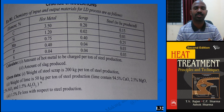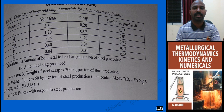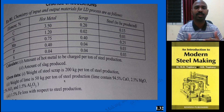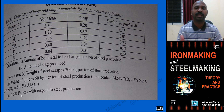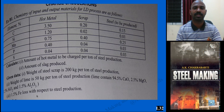The weight of lime used is 50 kg per ton of steel production. The lime composition is: 94.5% CaO, 2.5% MgO, 1.5% SiO2, and 1.5% Al2O3. Additionally, there is a 1.5% iron loss with respect to steel production — that is, iron loss in slag form as FeO.